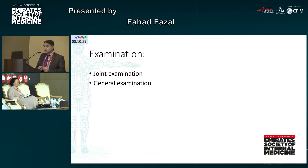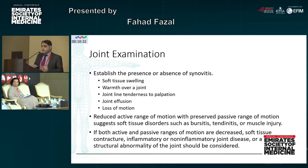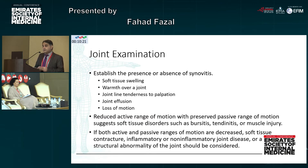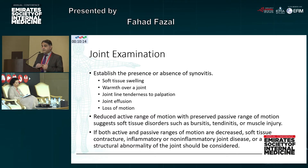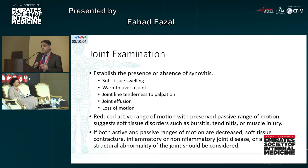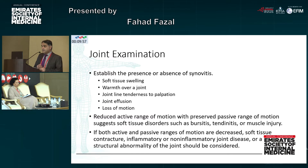Coming to the examination, it is divided into two parts: joint examination and general examination. In joint examination, when we suspect inflammatory polyarthritis, the first thing is to establish the presence or absence of synovitis, which basically means joint swelling. There may be warmth over the joint, visible swelling, joint line tenderness, effusion, and loss of motion. Reduced range of active motion with preserved passive range of motion usually suggests a soft tissue disorder such as bursitis, tendinitis, or muscle injury. However, if both active and passive range of movements are reduced, it usually suggests a joint disorder or contracture.